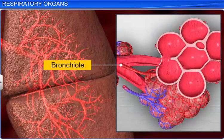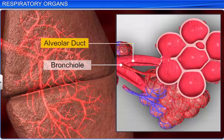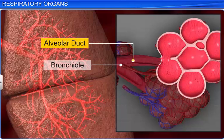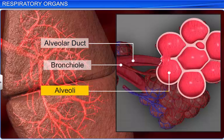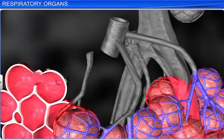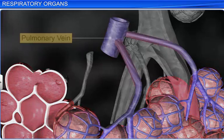The terminal bronchioles connect to ducts called alveolar ducts, that open into tiny, spongy, air-filled sacs called alveoli, which look almost like a bunch of grapes. An average adult's lungs contain about 600 million alveoli. Each alveolus is covered by thin and fragile blood capillaries, which combine to form the pulmonary vein.